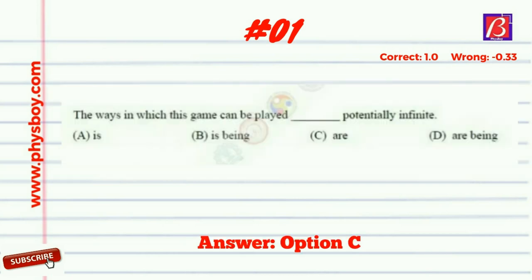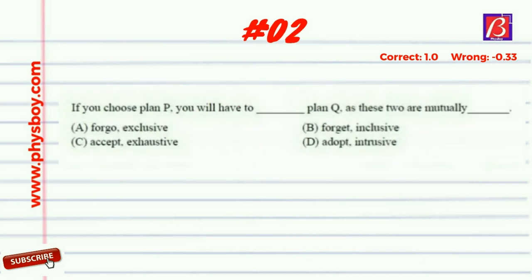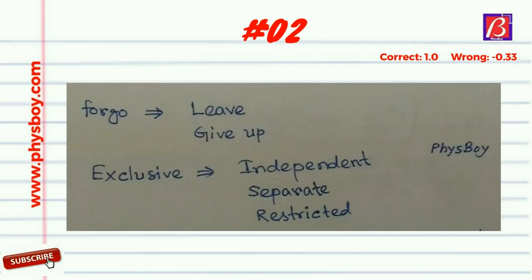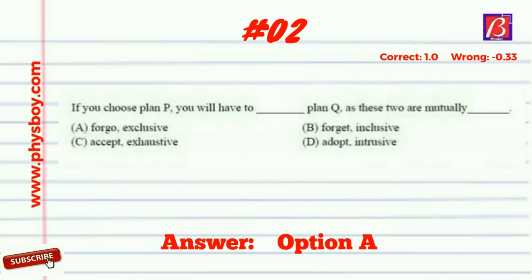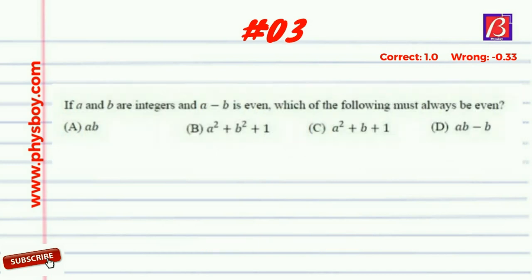Question number two: 'If you choose plan P, you will have to dash plan Q, as these two are mutually dash.' Looking at option A — 'forgo' and 'exclusive' — forgo means to give up, and exclusive means independent, restricted, or separate. For this sentence, the word pair 'forgo' and 'exclusive' is appropriate: 'If you choose plan P, you have to forgo plan Q, as these two are mutually exclusive.' Option A is the correct answer.